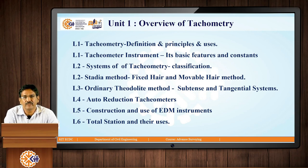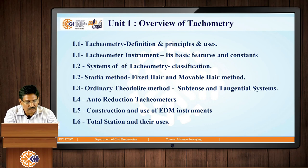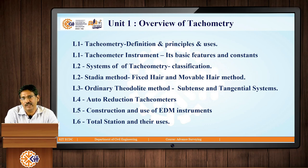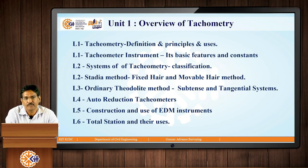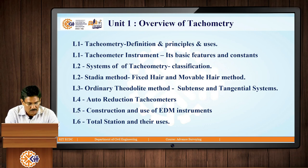The first subhead will be tachymetric definitions, principles, and uses. Second, we will be learning about the tachymetric instrument used for tachymetry. We will also be looking at the different systems of tachymetry — essentially the classifications, the different methods that make up tachymetry. Then we will look at the prominent method, the Stadia method, including fixed hair methods and movable hair methods.